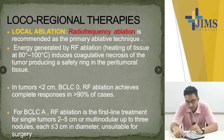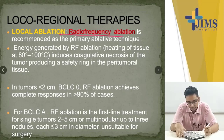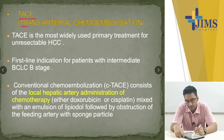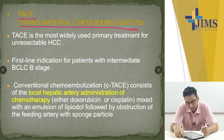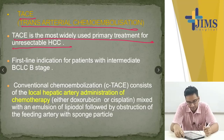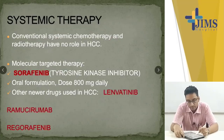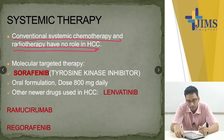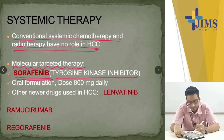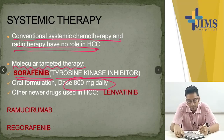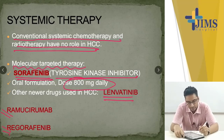Locoregional therapies include radiofrequency ablation. TACE — transarterial chemoembolization — is most widely used as primary treatment for unresectable HCC. Conventional systemic chemotherapy and radiotherapy have no role in HCC. Molecular targeted therapy: sorafenib — remember this name — is a tyrosine kinase inhibitor given at 800 mg daily. A newer drug is lenvatinib.